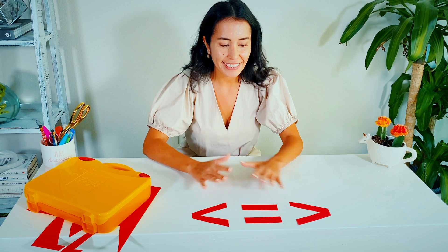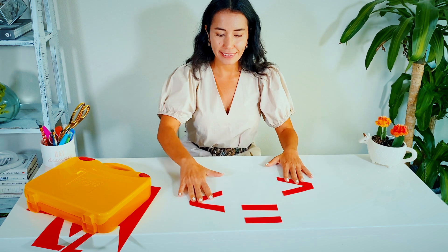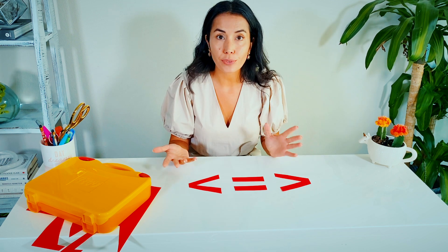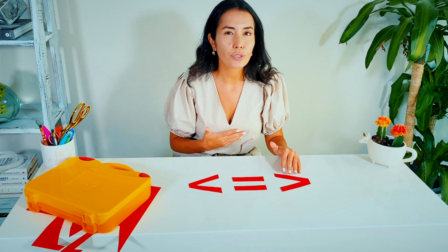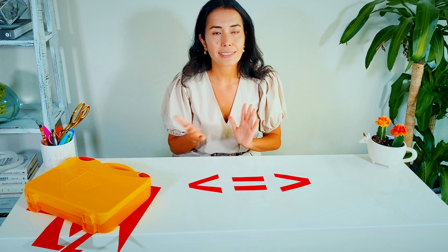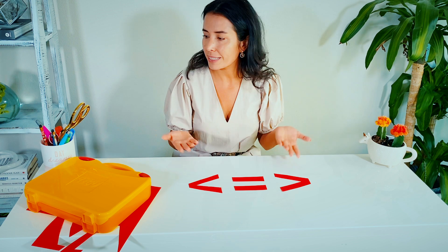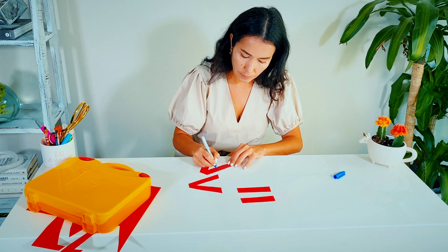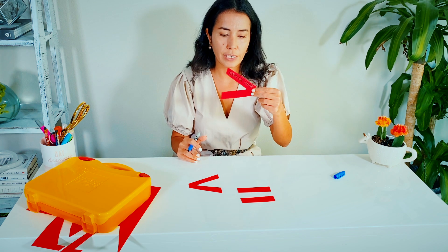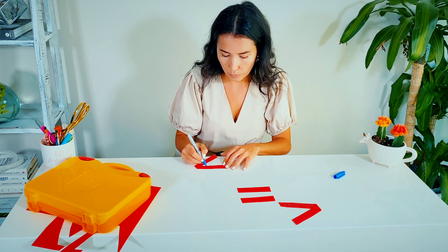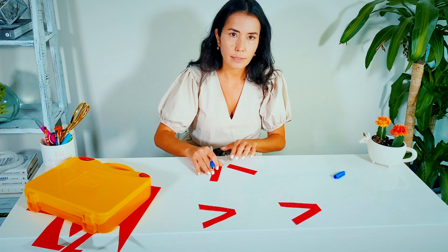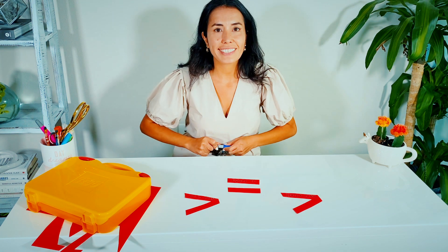All right, as you can see I have my less than, greater than, and equal to signs. I actually always like to write the name of the symbols so my student can see the written version of that word. So I'm going to write less than, greater than, and equal to on my signs. This will be greater than, this is less than, and this is equal to.